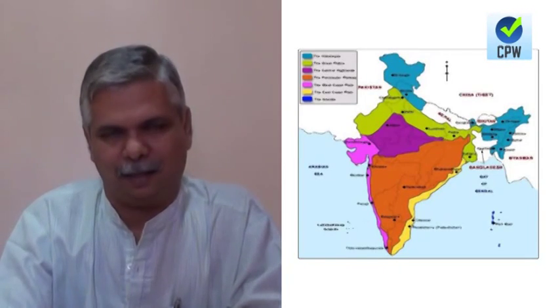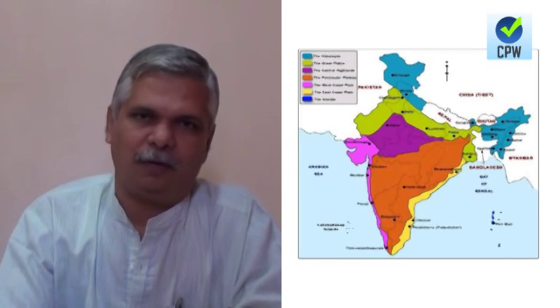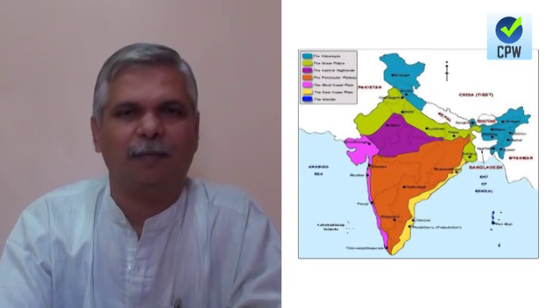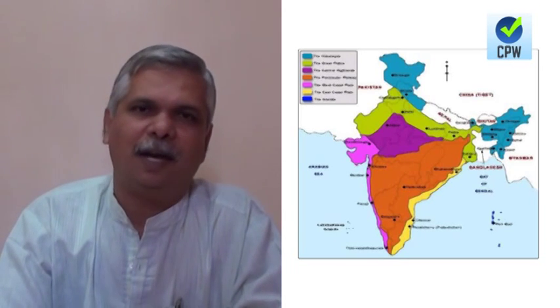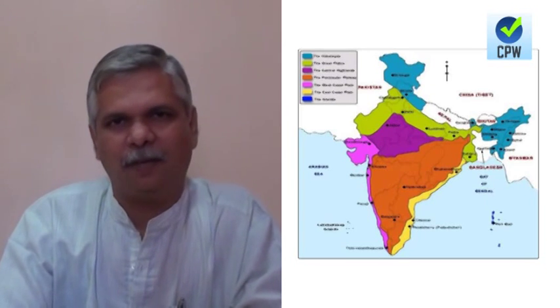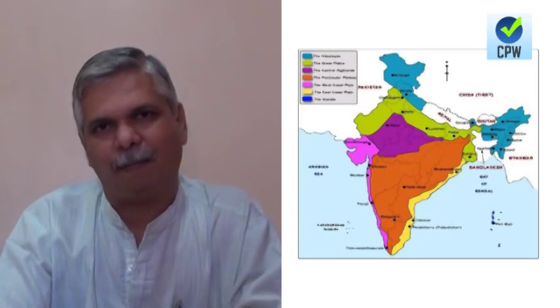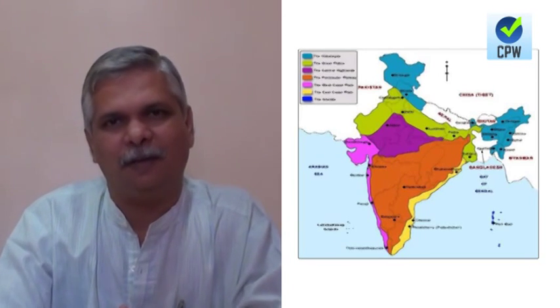As far as physiography or relief features are concerned, we can divide India into five major groups: the Himalayan division, the Indo-Gangetic plain (more commonly referred to as the northern great plains), the Deccan plateau or plateau proper, the coastal plains of India, and the islands. So there are five major physiographic divisions of India.